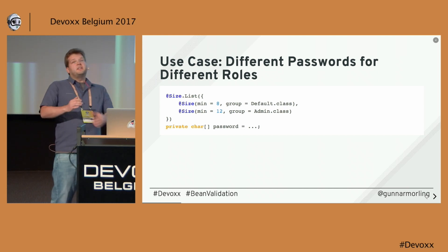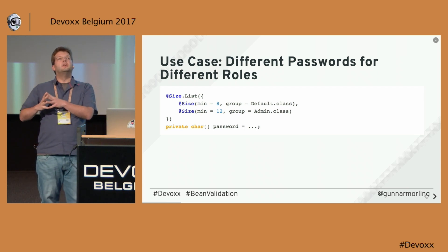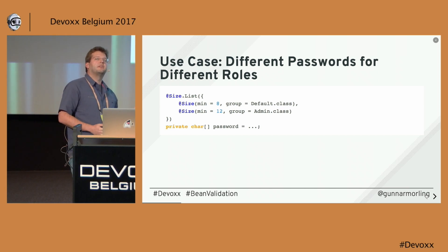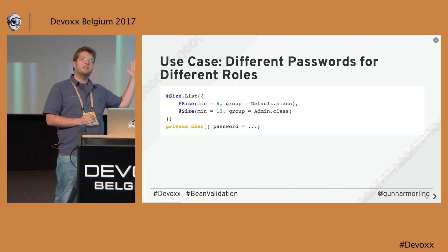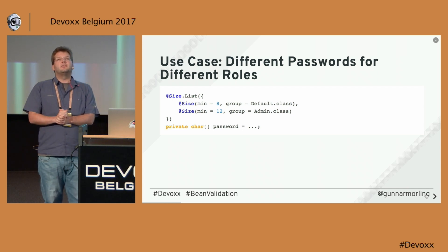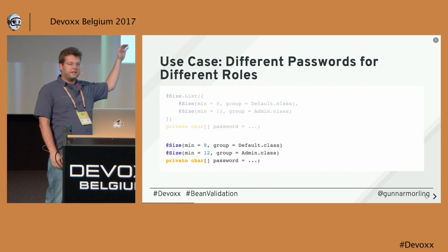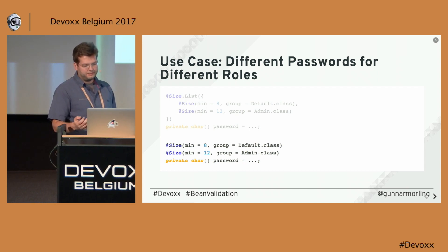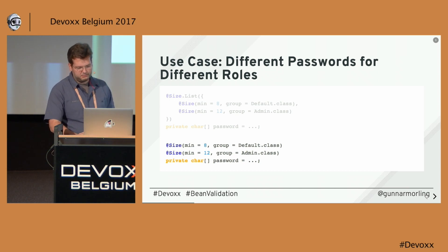The first use case is validation of passwords. Specifically, depending on the role a user has in your application, different password lengths should be enforced — a regular user should have a password of length 8, whereas an administrator should have a password of length 12. The way you do this in Bean Validation is by specifying a constraint, @Size in this case, multiple times and assigning it to different validation groups. Before Java 8, you had to specify the list annotation explicitly, whereas now we can just write those annotations right after each other, which is possible via the new repeatable annotation feature in Java 8. It's a nice readability enhancement.